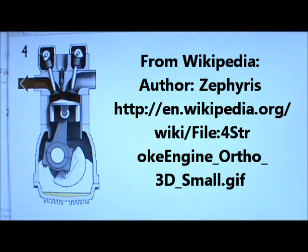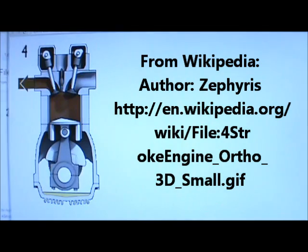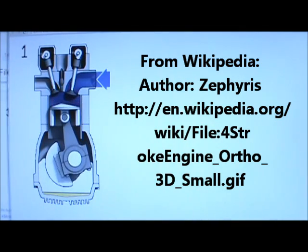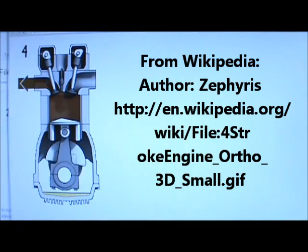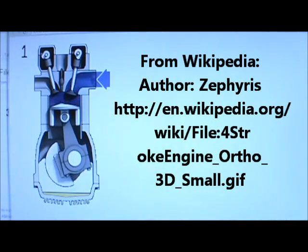Here is a Wikipedia animation of an internal combustion engine. This particular one has a four-stroke cycle. The burning of the gasoline air mixture in the cylinder provides the high temperature, and the temperature of the exhaust is the low temperature.